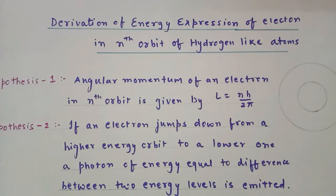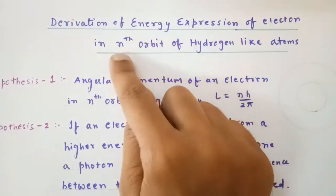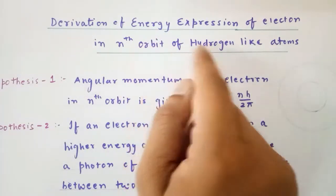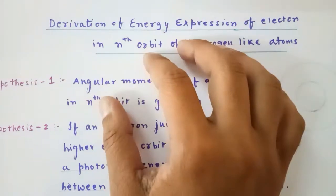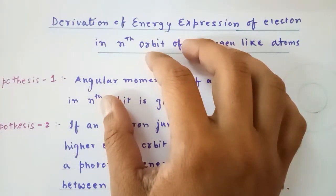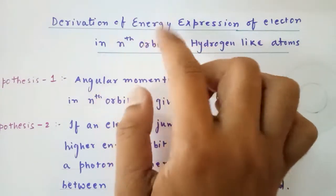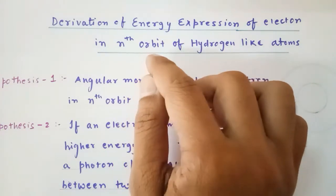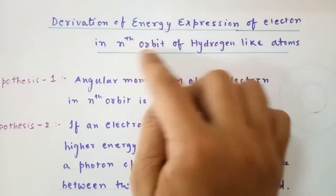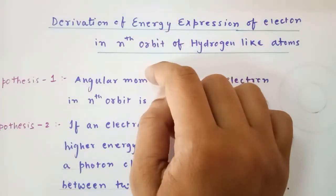Hello scientific people, how are you today? Today we are going to discuss the derivation of the energy expression of an electron in the nth orbit of hydrogen-like atoms. We are basically going to discuss Bohr's model and find out the expression of energy of an electron in the nth orbit as per Niels Bohr's model.